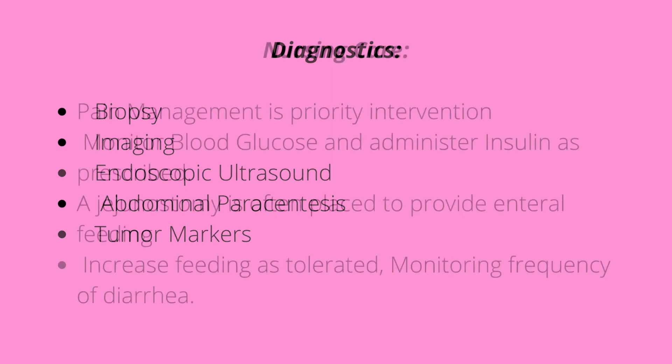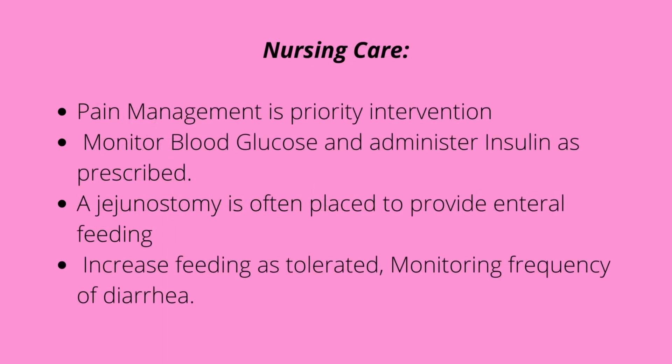For nursing care of this patient, we always manage pain — it's always a priority intervention with all our cancer patients. We monitor blood glucose and administer insulin as prescribed. A jejunostomy is often placed to provide enteral feeding. We increase the feeding as tolerated and monitor for frequency of diarrhea, as frequent diarrhea indicates the patient is not tolerating the food — they're having dumping syndrome.